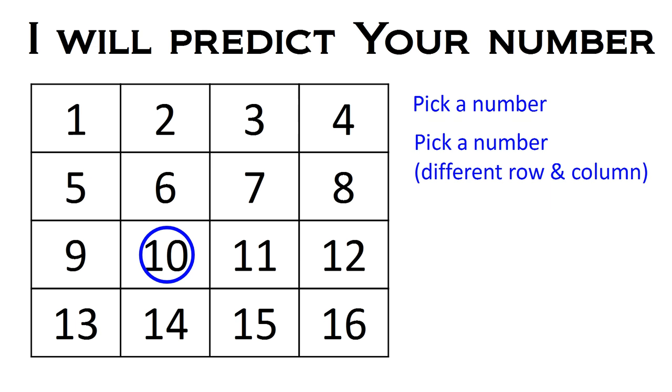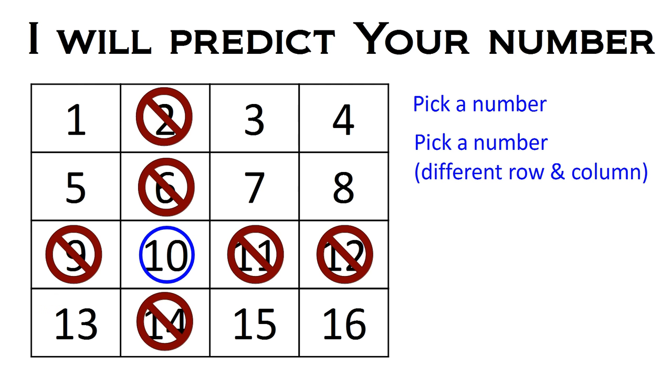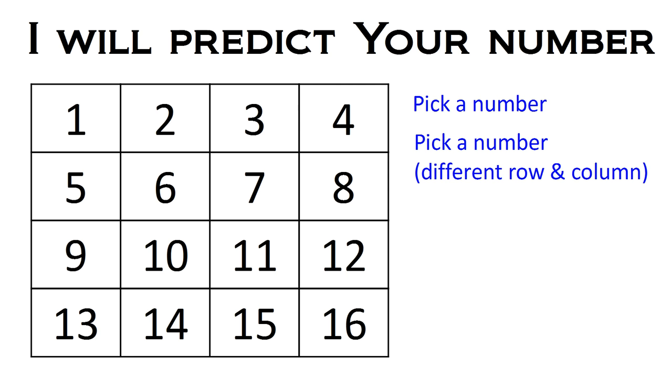So if you pick the number 10 as your first number, the next number you pick should not be in the same row and it should not be in the same column. So you can pick from any of the remaining numbers that are not in the same row and the same column as the first number you picked. I also want you to remember this number. So remember the first number you picked and the second number you picked.